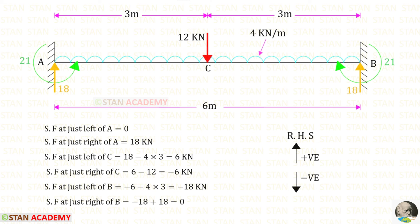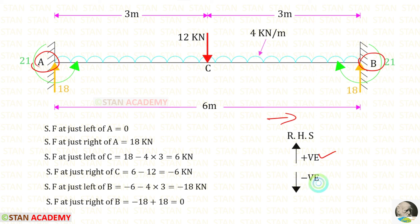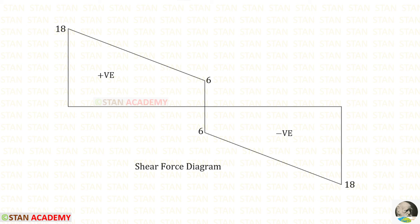Now we are going to draw the shear force diagram. Finding shear force values from point A towards point B, moving right — upwards will be positive and downwards will be negative. You can see the calculations and the resulting shear force diagram.